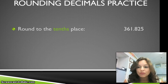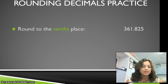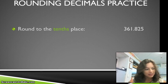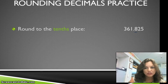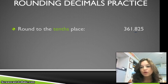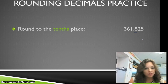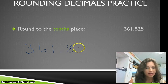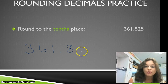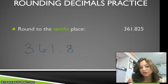We have 361 and 825 thousandths, rounding to the tenths place. The digit we're looking at is the 8. The number behind the 8 is a 2. That 2 is 4 or below, so we're going to keep 8 the same and put zeros behind it. This number rounded to the tenths place is 361 and 8 tenths. We don't have to put zeros behind it because they add no value. That's what 'except after decimals' means in our poem.